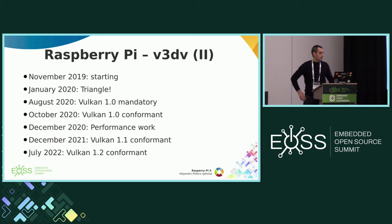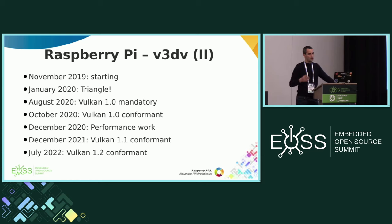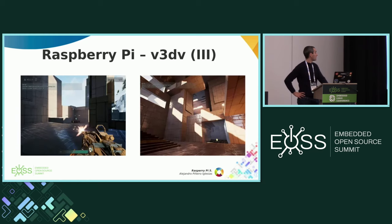Here is a quick timeline of the Vulkan driver. We started it in November 2018. In one year, we had a Vulkan 1.0 conformant. Since then we have been working on adding more extensions, so it became 1.1 and 1.2 conformant, and also working a lot on improving the performance. Here are some screenshots of the Raspberry Pi 4 running Unreal Engine demos.